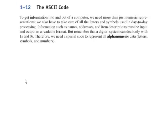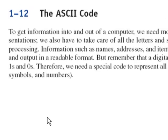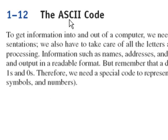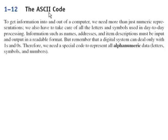Hi, this is Professor Kleitz, and in Section 12 we're going to talk about the ASCII code, the American Standard Code for Information Interchange. You may have thought, how do we get, besides just numbers, what about all the letters and the symbols — the letter M, the letter T, the dollar sign, the percent sign, and so on. So there's been a code developed, and it's actually a 7-bit code, and with 7 bits you can have 128 possible different combinations.